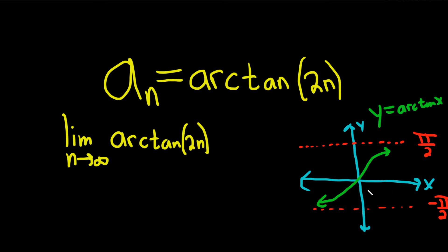So this is the graph of y equals arctangent of x. You see that as x approaches infinity, the y values get closer and closer to pi over 2. So here as n approaches infinity, 2n also approaches infinity.